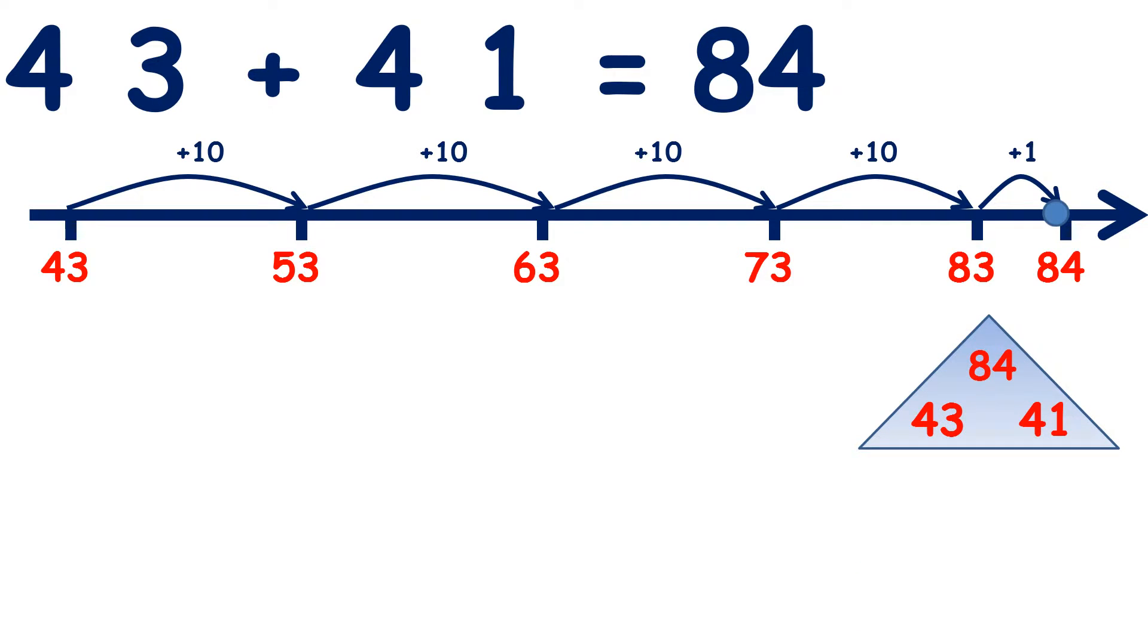Now with any addition question we can make a number family triangle. The numbers at the bottom added together make the number at the top, but if we subtract one of the bottom numbers from the top number we will get the other bottom number.